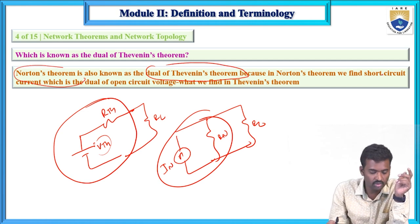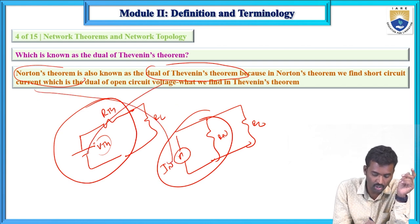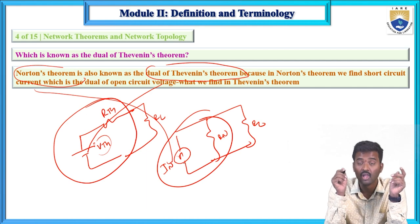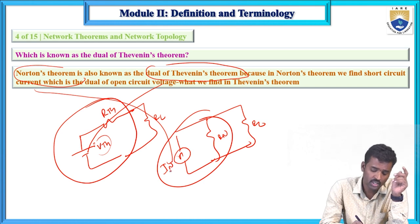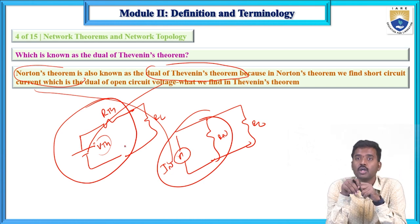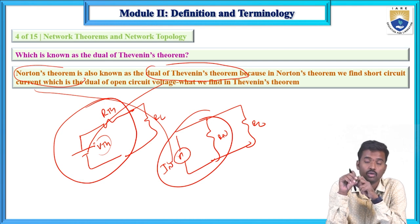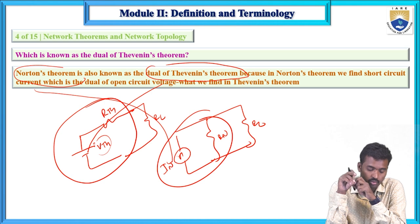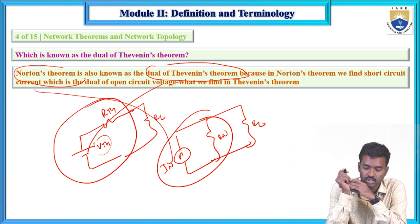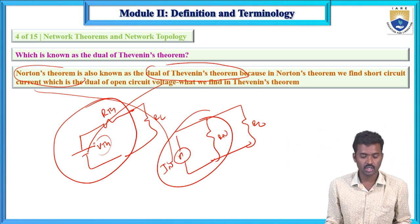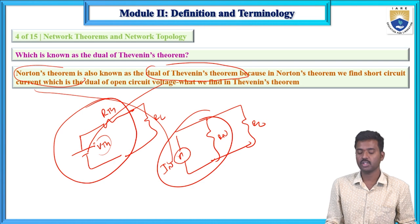In Norton's theorem, we find the short-circuit current. The dual of open-circuit voltage is short-circuit current. IN is calculated by removing the load resistance, shorting the load terminals, and calculating the short-circuit current. Similarly, in Thevenin's theorem, you remove the load resistance, open the load terminals, and calculate the open-circuit voltage VTH. Hence Norton's theorem is the dual of Thevenin's theorem.